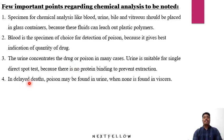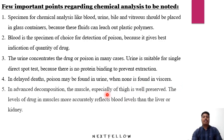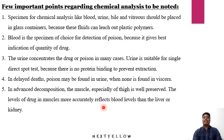In delayed deaths, poison may be found in urine when none is found in the viscera, because it has been filtered from the viscera into the urine. In advanced decomposition, the muscle — especially of the thigh — is well preserved, and drug levels in muscle more accurately reflect blood levels than the liver or kidney.